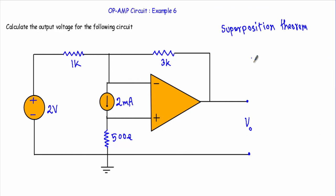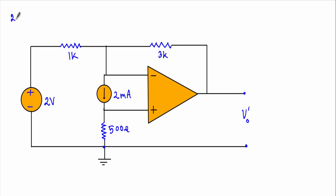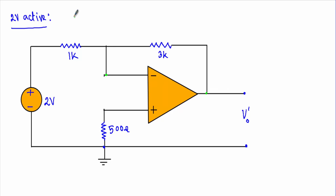Now I will proceed with the output voltage calculation using superposition theorem. First, I will keep the 2-volt source active and denote the output voltage as VO prime. I will replace the current source with an open circuit, removing it from between the inverting and non-inverting terminals. The output terminal is connected to the inverting terminal, so the circuit is in negative feedback, which means VP will be equal to VN.